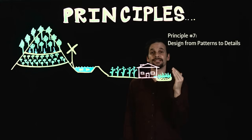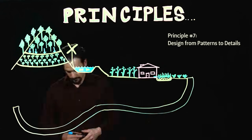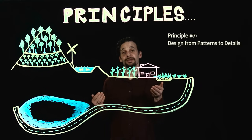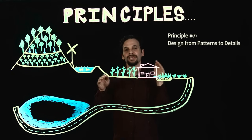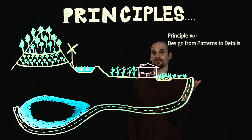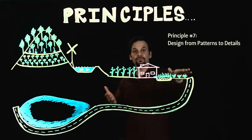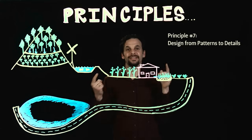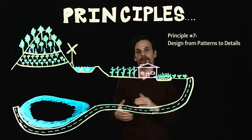Principle 7 is Design from Patterns to Details, and this is one of my personal favorites. It means that first we study the climate, topography, watershed, and ecology, and we get a big picture vision of how we can interact with the land and community in a regenerative way, and then our design decisions are based on that. So this road I just drew in is placed in a way where it harvests water for this pond — the detail of road placement was based on the overall pattern of water flow in the landscape.